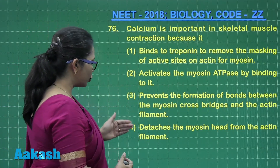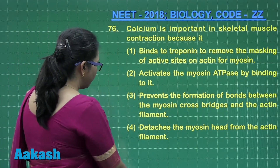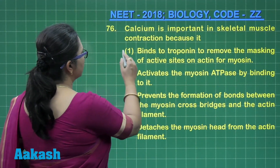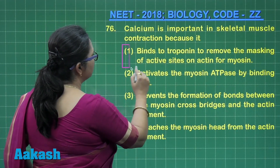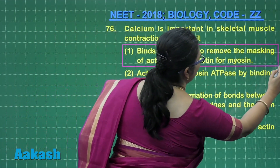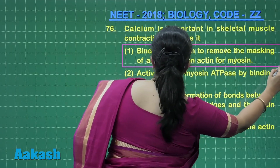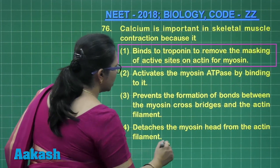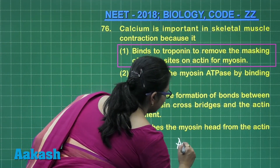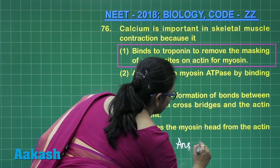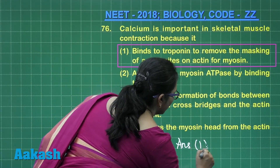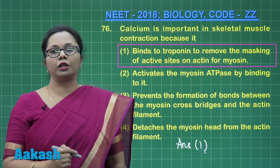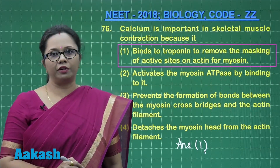Reviewing the four choices, this particular mechanism is described in option number 1. So the correct answer is option 1. Let us move ahead with question number 77.